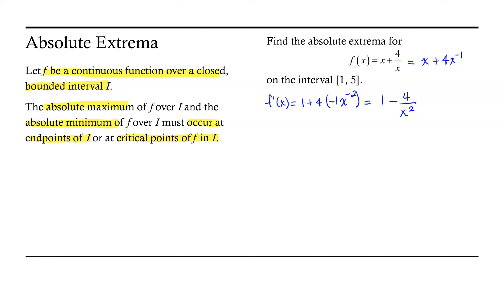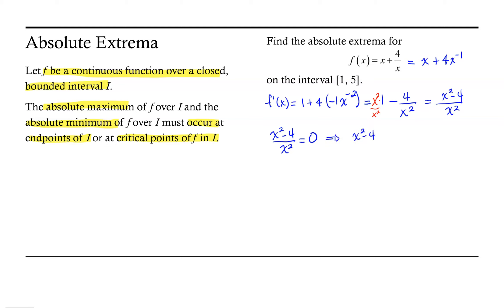So let's rewrite this as 1 minus 4 over x squared. Now recall we're looking for critical points, so we need to set this function equal to 0 and solve for x. Let's go ahead and get a common denominator. For our first term, we're going to multiply by x squared over x squared, so that we create a common denominator of x squared. Now our derivative function looks like x squared minus 4 over x squared. Now let's go ahead and set this function equal to 0 and find those solutions.